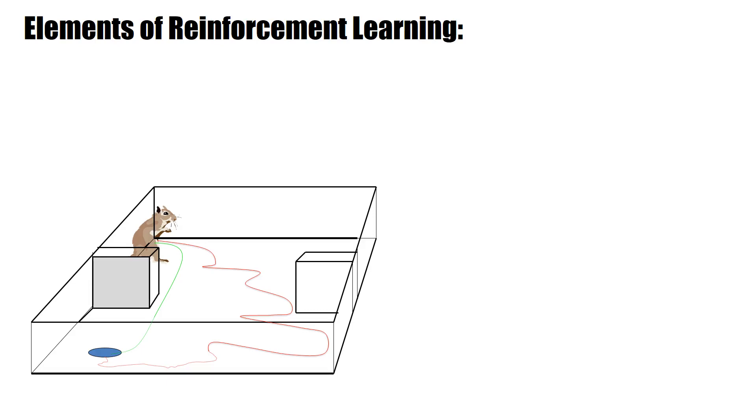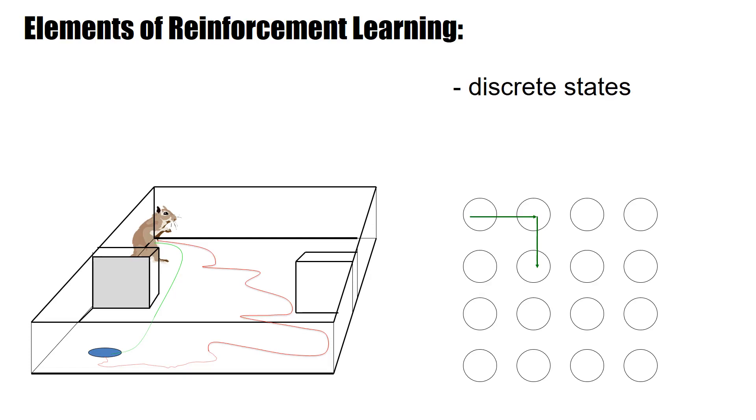So what are the elements? Well, you have to discretize the state space, you have to discretize the environment. So now we have discrete states, and in these states we can make transitions. And these transitions have some freedom because, for example, here you could have decided to go east, to go south, to go west, to go north, but you decided to go south.